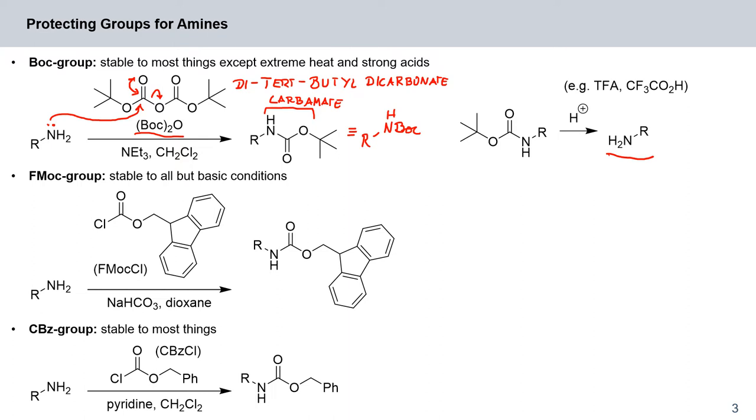Then the second example, the FMOC group. This is derived from fluorenyl and methoxycarbonyl. And it can be abbreviated analogously to the BOC group as R-N-FMOC-H.